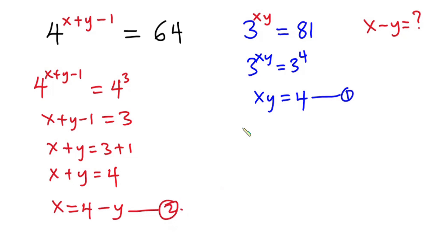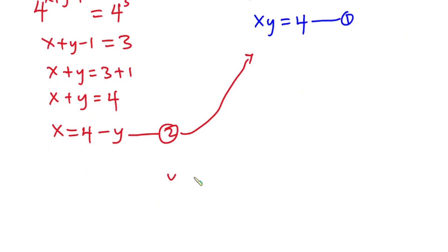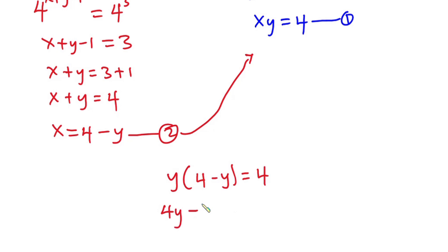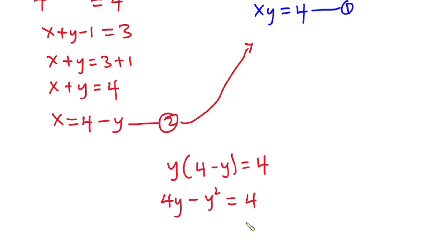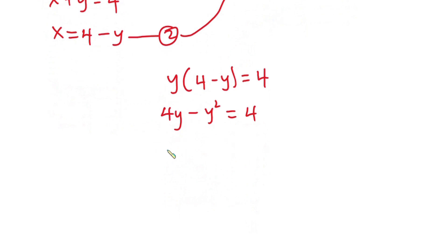Putting equation 2 into equation 1, we have y times 4 minus y equal to 4. Expanding, we have 4y minus y squared is equal to 4. Equating everything to 0, we have negative y squared plus 4y minus 4 is equal to 0.